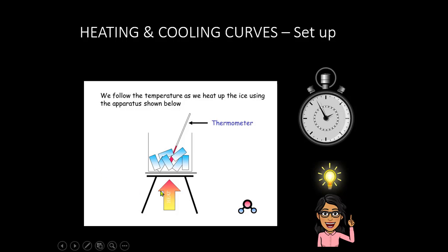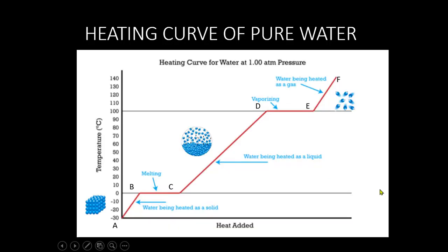So this is one example of the setup of a heating curve of water. After about 20 or 30 minutes after heating ice, we can plot a graph of temperature versus time. This should be time in minutes. And we will end up with a graph looking something like this, this red line here.